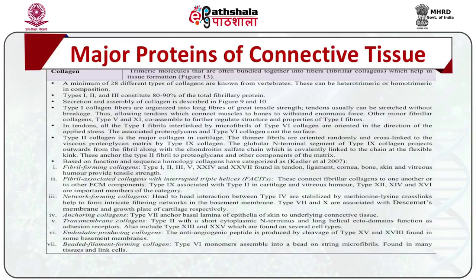The associated proteoglycans and type VI collagen coat the surface. Type II collagen is the major collagen in cartilage, where thinner fibrils are oriented randomly and cross-linked to the viscous proteoglycan matrix by type IX collagen. The globular N-terminal segment of type IX collagen projects outwards from the fibrils along with chondroitin sulfate chains covalently linked to the chain at the flexible kink, anchoring type II fibrils to the proteoglycans and other matrix components.